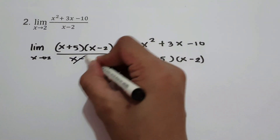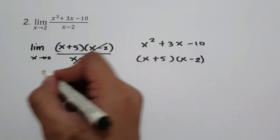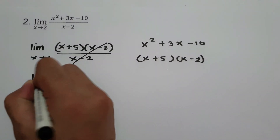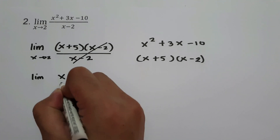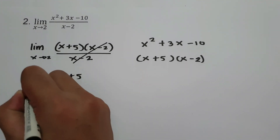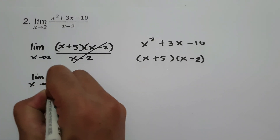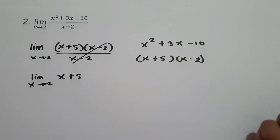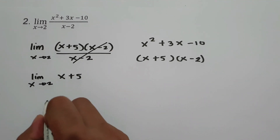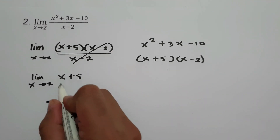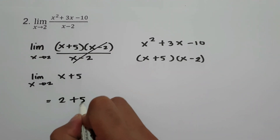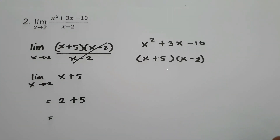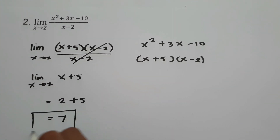So we have the limit of x plus 5 times x minus 2 all over x minus 2 as x approaches 2. We cancel x minus 2, leaving the limit of x plus 5 as x approaches 2. Substituting x equals 2: 2 plus 5 gives us 7. So our limit is 7.